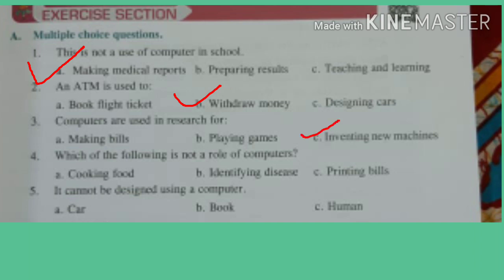Number 4: Which of the following is not a role of computers? Read properly — not a role, that means the work that computers don't do. The options are cooking food, identifying disease, printing bills. The answer is very easy here: cooking food. Computer cannot cook food.